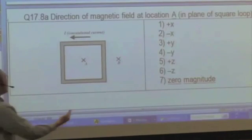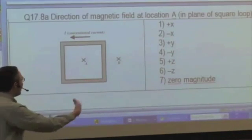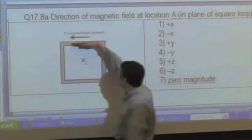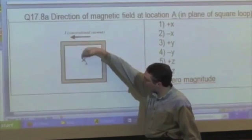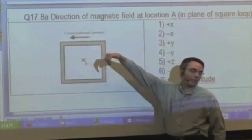Or I could say that I delta L cross R hat, IDL is pointing that way, curl the fingers down in the direction of R hat, which points towards the observation location, thumb points out.